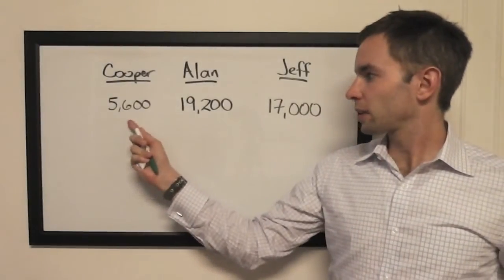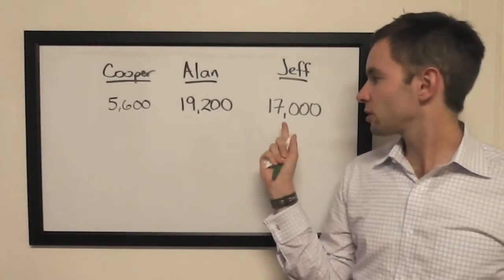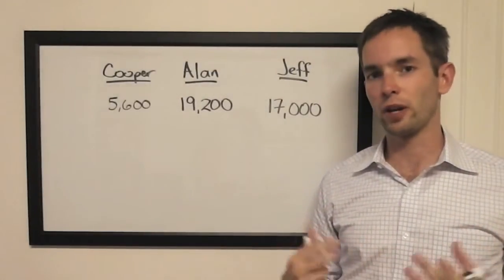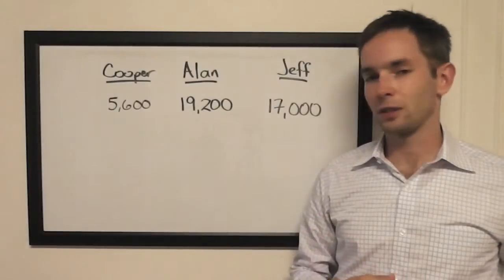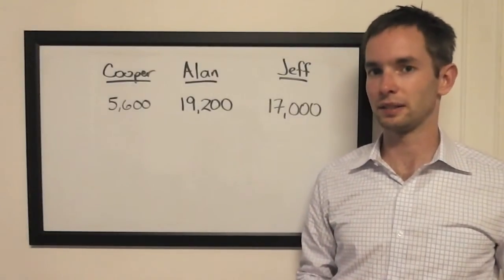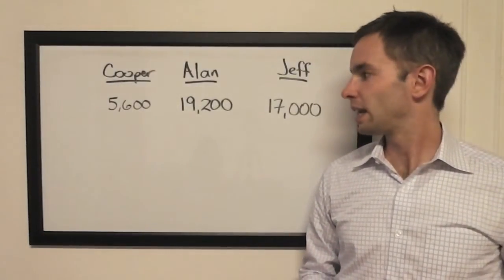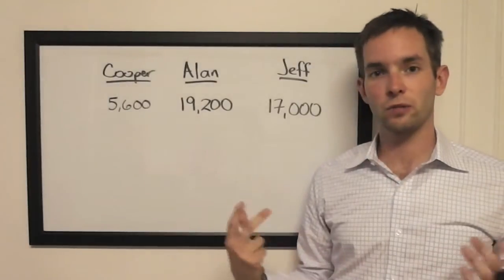I was expecting Cooper to go big here and try to get back into contention, Jeff to go pretty small just because he seems like a conservative wagerer, and Alan to go really big because he seems to like literature and he was very aggressive in the quarterfinals.